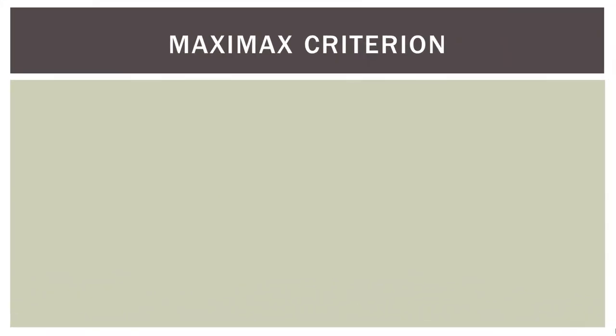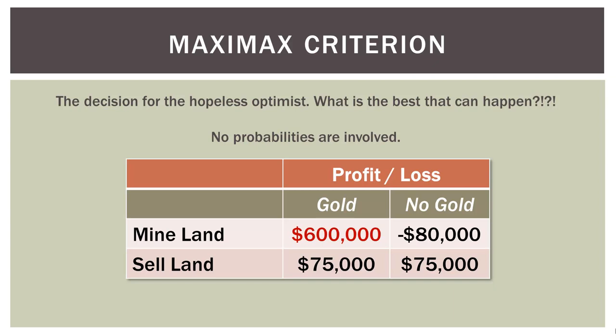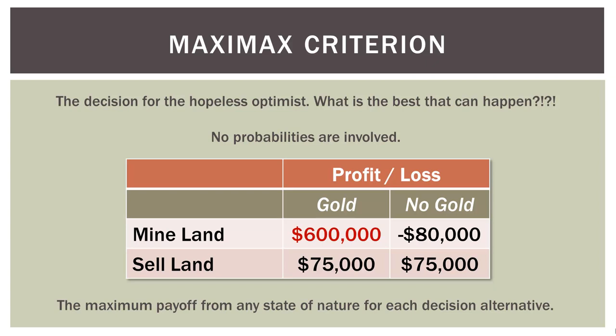The first criterion is the Maxi-Max Criterion — this decision is for the hopeless optimist. What is the best that could happen? No probabilities are involved here. The best thing that could happen is we mine the land and there's gold there, yielding $600,000. Under the Maxi-Max Criterion, we would choose to mine the land because that gives us the highest payoff. You simply look at your payoffs and pick the one with the highest outcome.